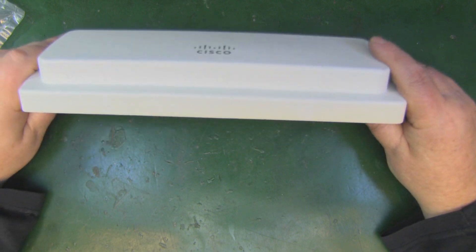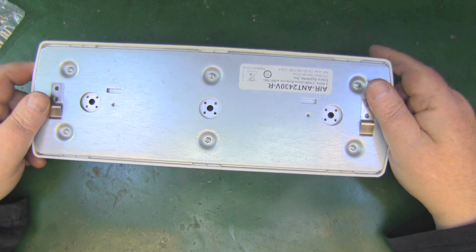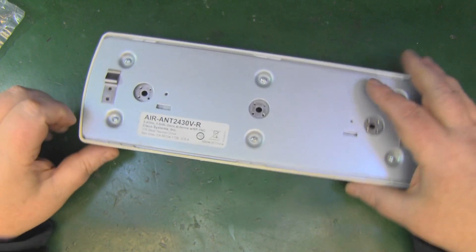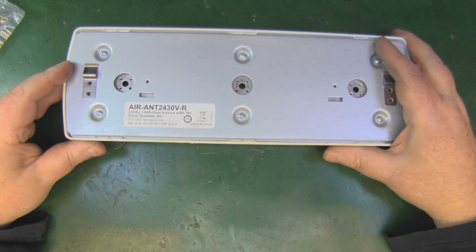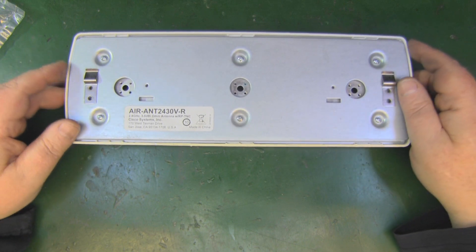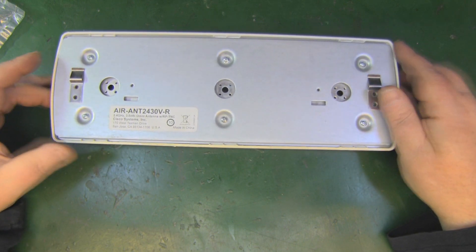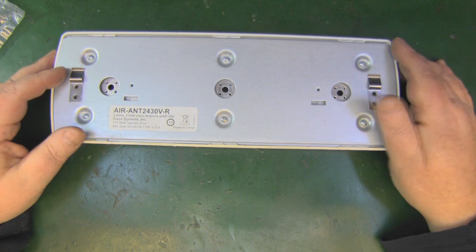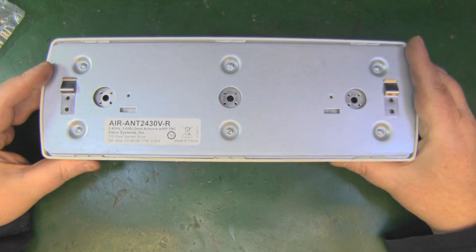It is quite a big antenna, the ant2430vr if you want to look this particular antenna up. What's interesting about this antenna is it's pretty big but it's only 2.5 dB of gain.